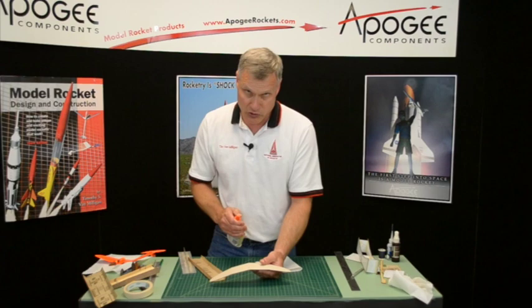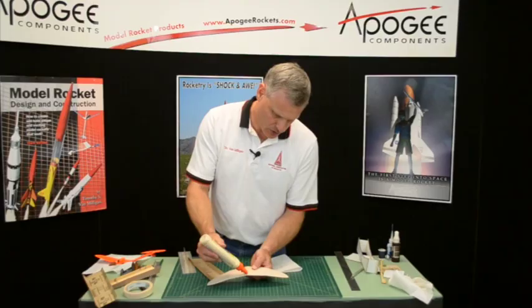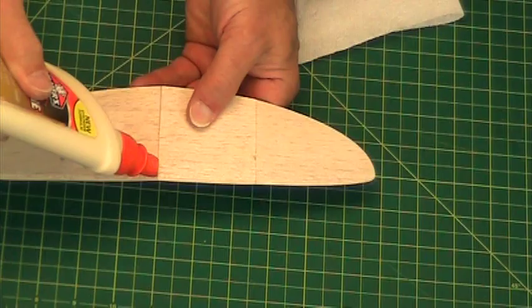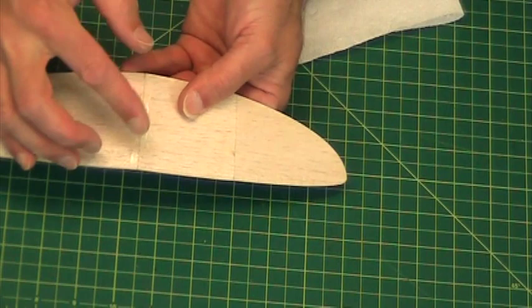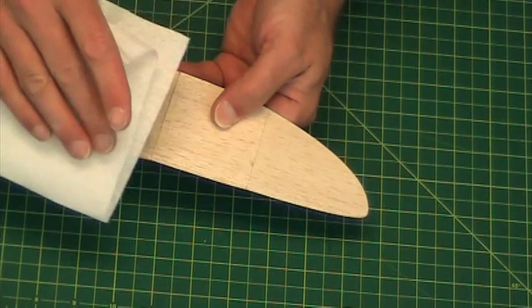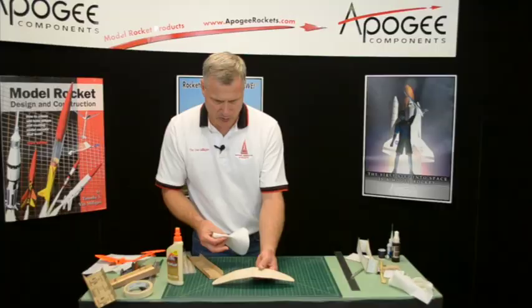So I'm just going to run a little bit of glue. My middle gap, my middle joint - this is the one that I worry about the most. Really work it into that joint. And if you have a little bit of water on your napkin, you can take off any glue that's on the surface.